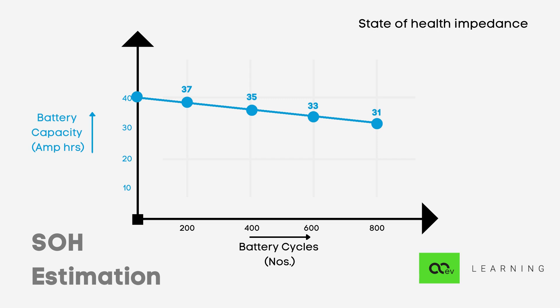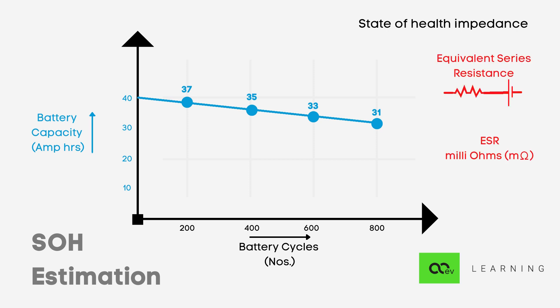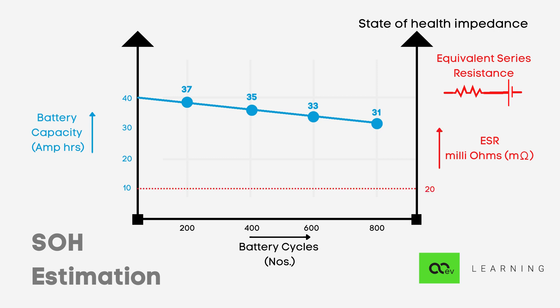Any lithium-ion battery cell can generally be modeled as a two-terminal device. You have an ideal lithium-ion cell and what is called ESR — the equivalent series resistance. Typically for a cell, this might be around 20 mΩ at the beginning of life at a certain temperature. Over time, as we charge and discharge the battery, this ESR or equivalent series resistance will increase.